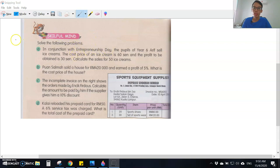Question A: In conjunction with entrepreneurship day, the pupils of year 6 Arif sell ice cream. The cost price of an ice cream is 60 cents, and the profit to be obtained is 30 cents. Calculate the sales for 50 ice creams. The formula is: cost price plus profit equals selling price.